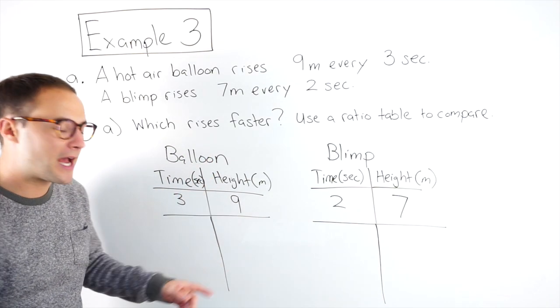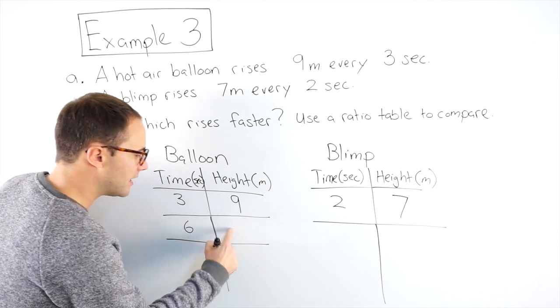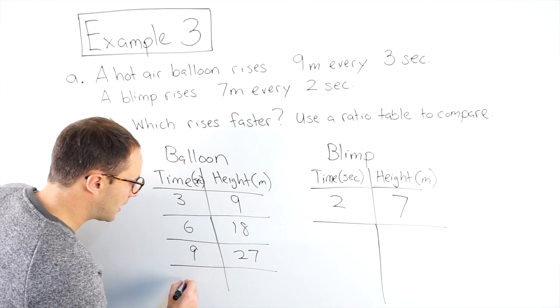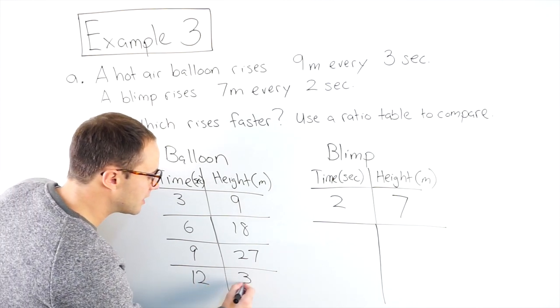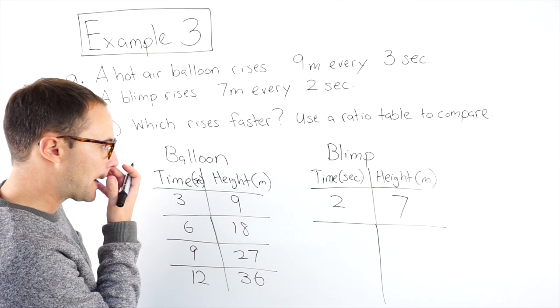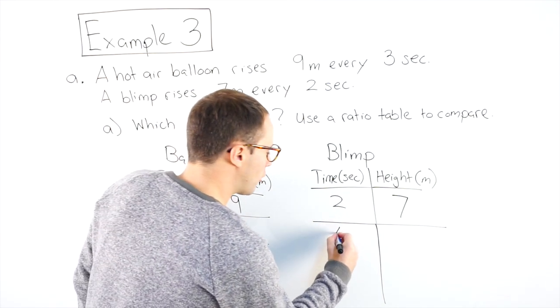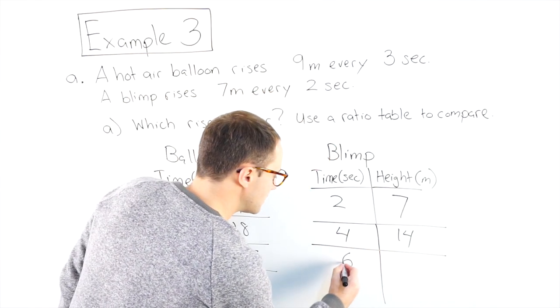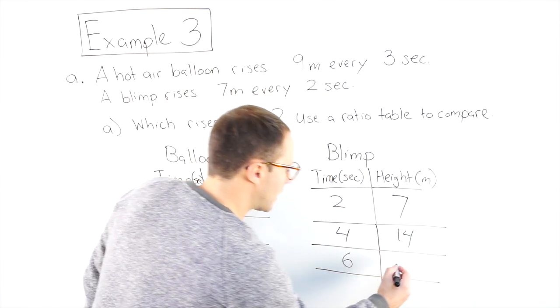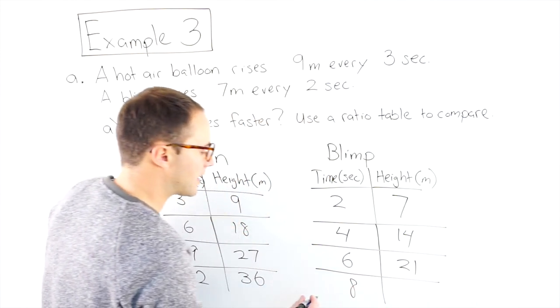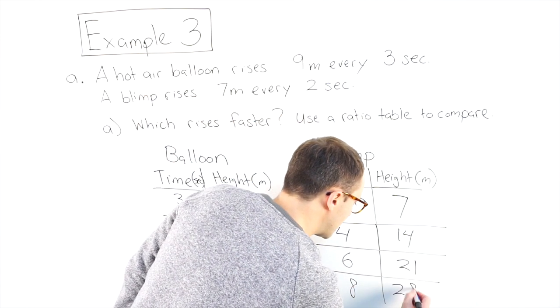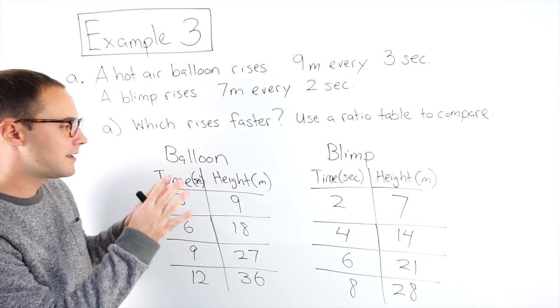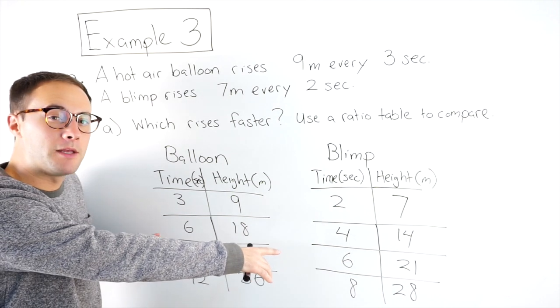Every three seconds, we're adding another nine meters. So next would be six seconds is at 18 meters. Nine seconds would be at 27 meters. 12 seconds would be at 36 meters. And I'll go another one, eight seconds would be at 28 meters. With this, hopefully you can see that there is a time that is the same in both.